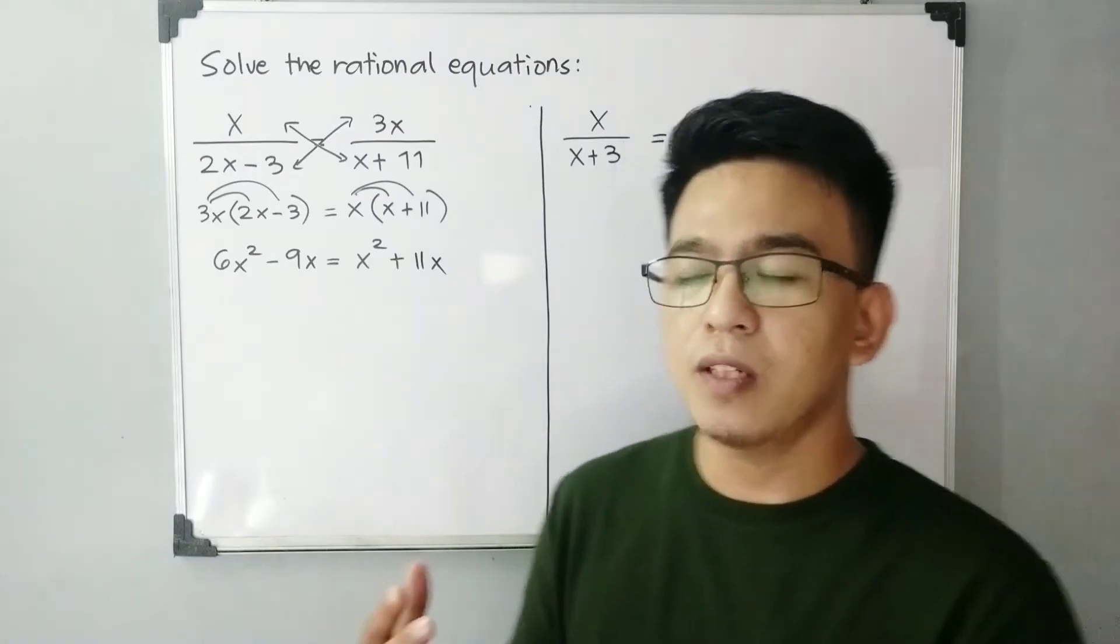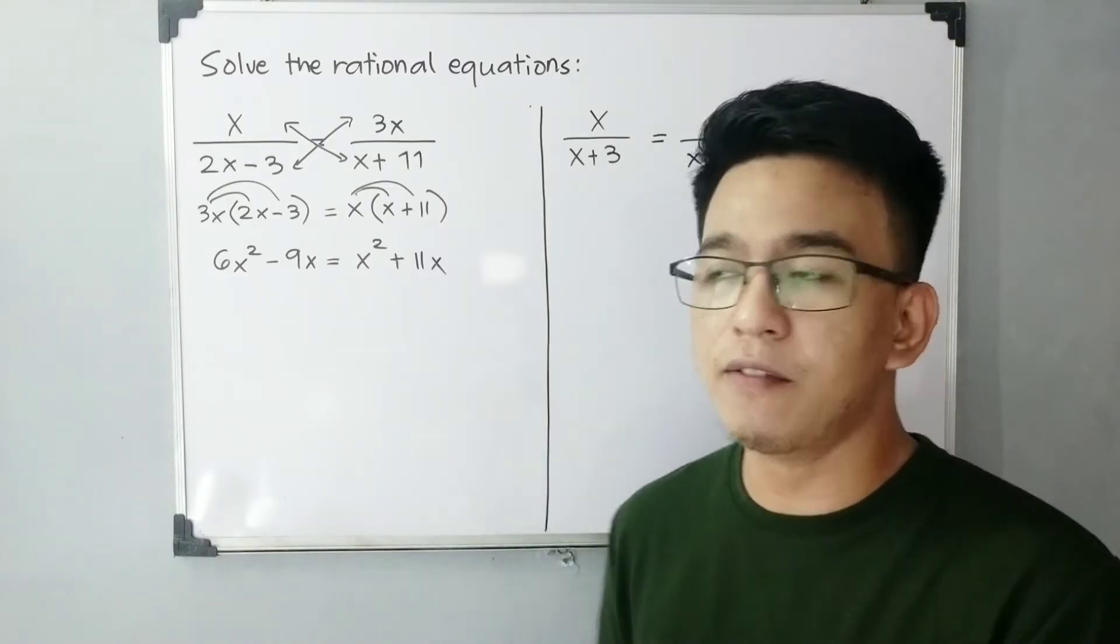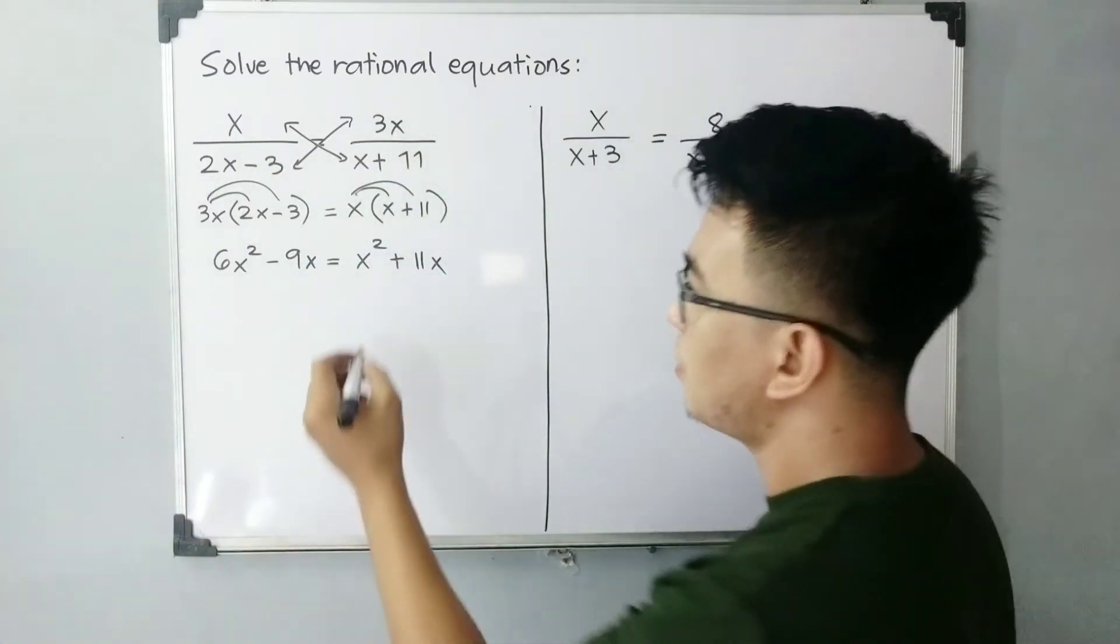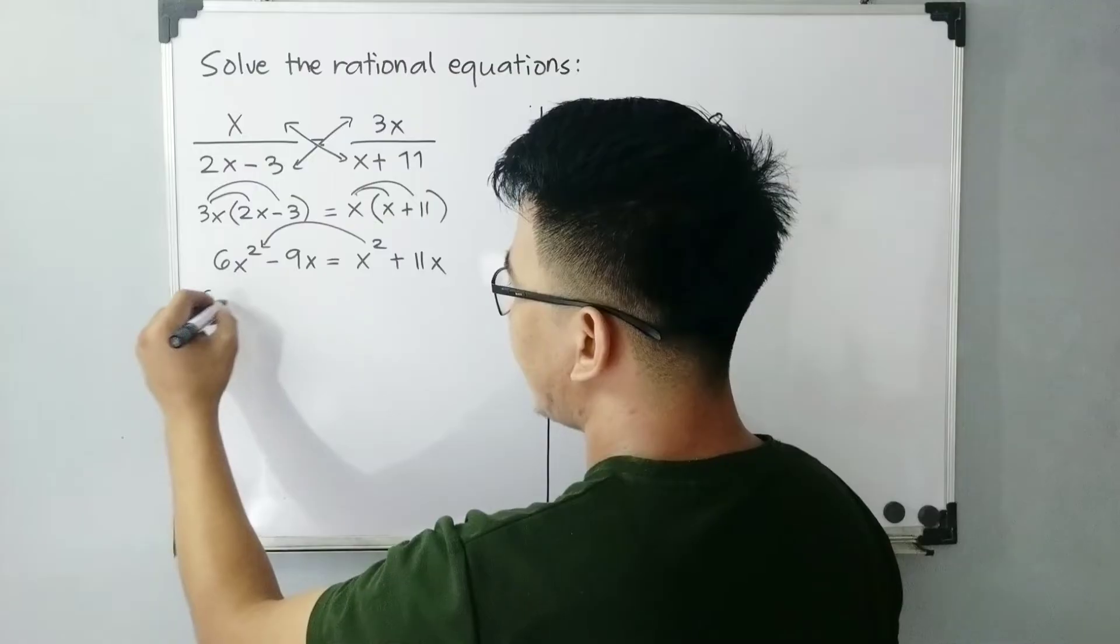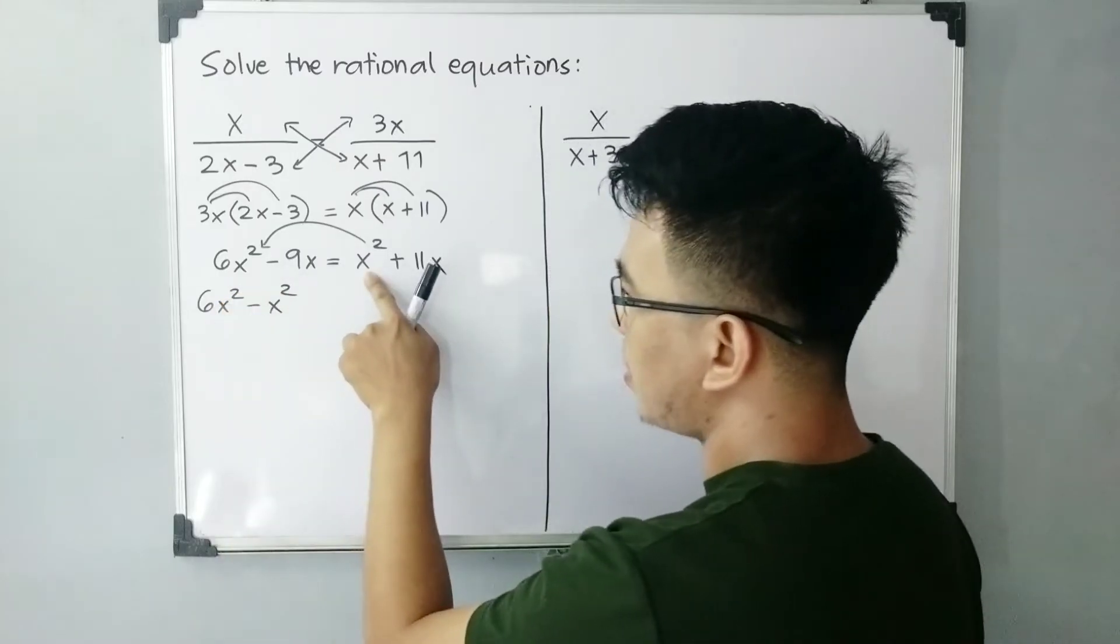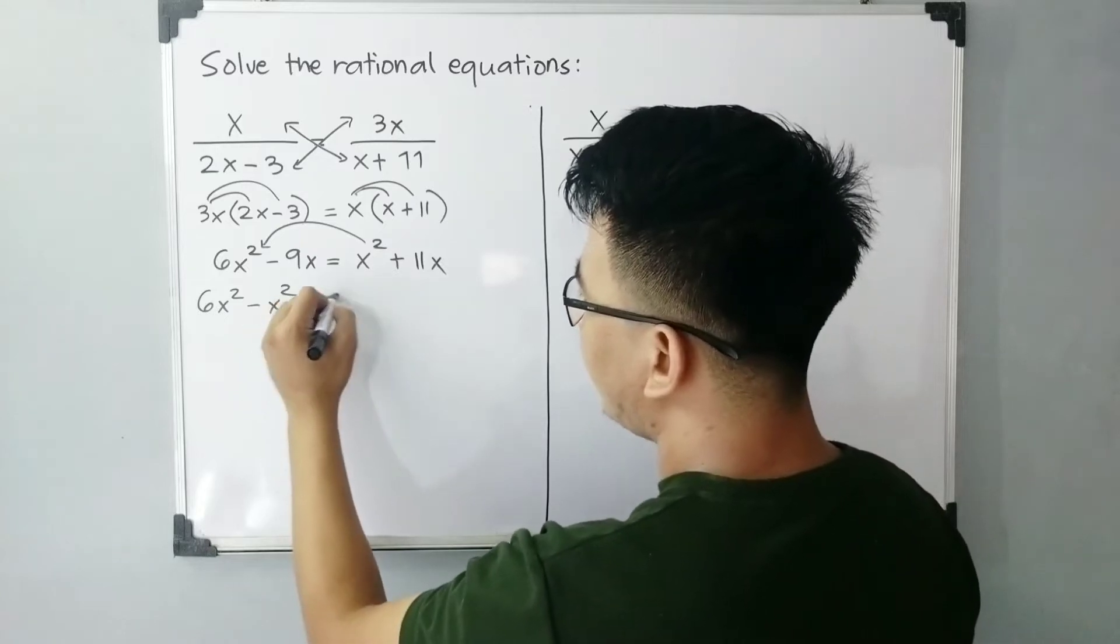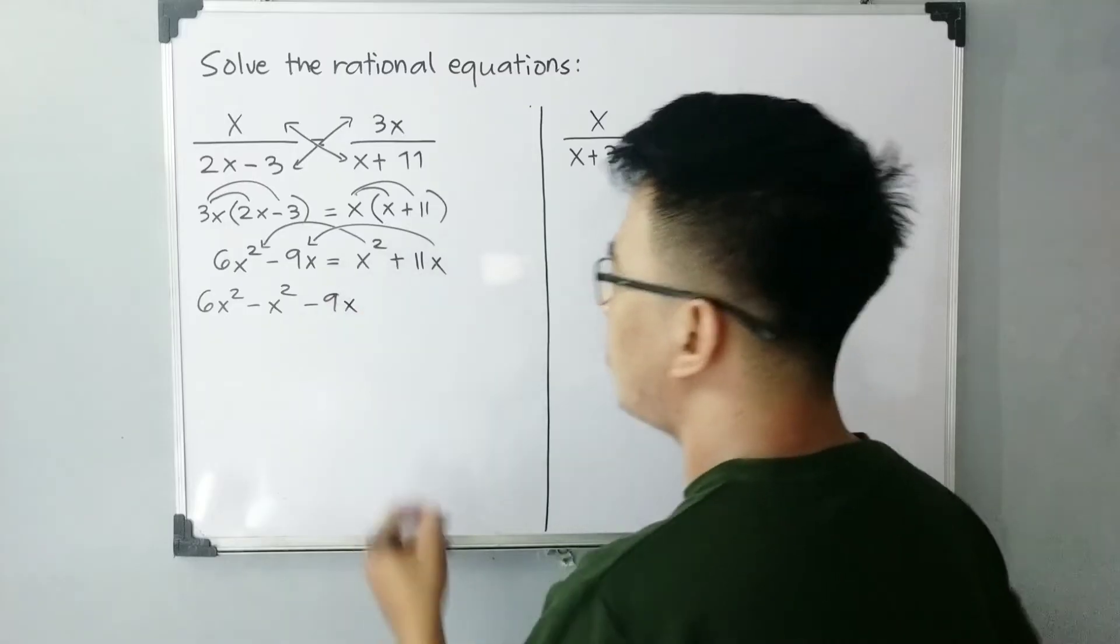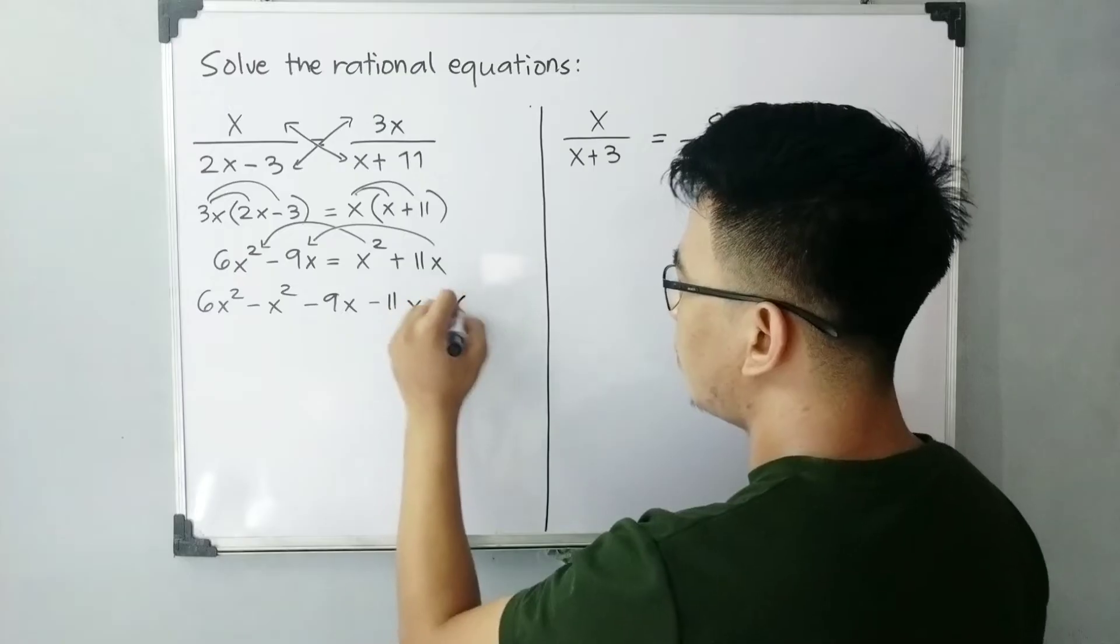And then you need to write this equation in standard form or you need to transpose these two terms to the other side of the equation. So if we transpose x squared to the other side, it will give us 6x squared minus x squared because from positive, it will become negative. And this one, copy negative 9x. And this one, transpose, from positive, it will become negative.